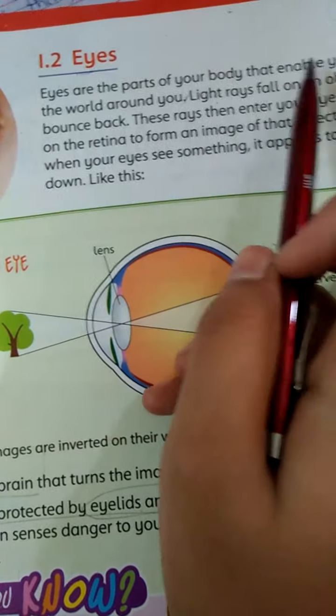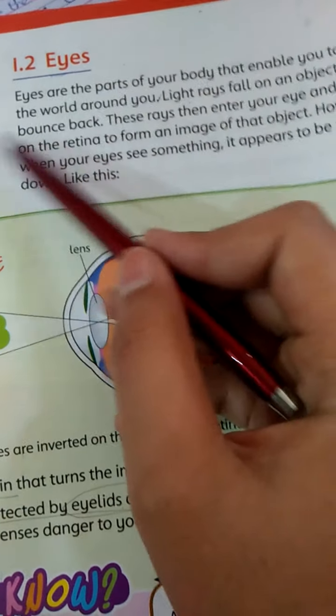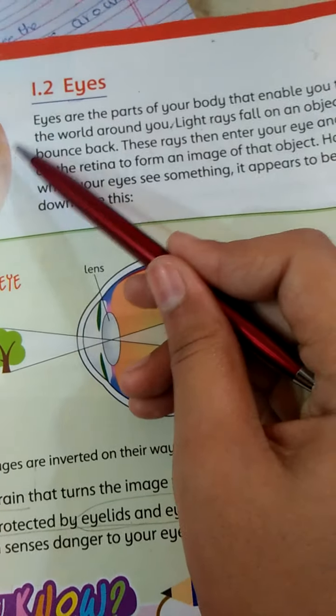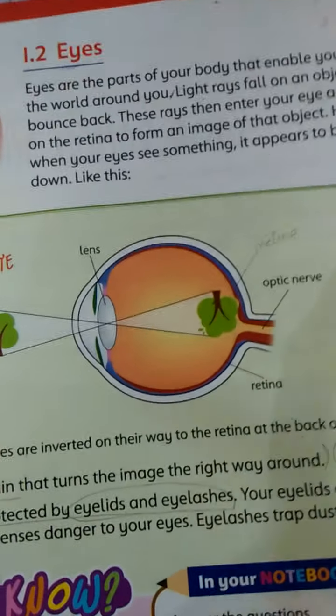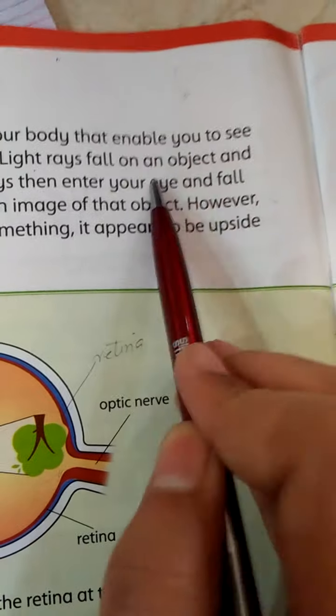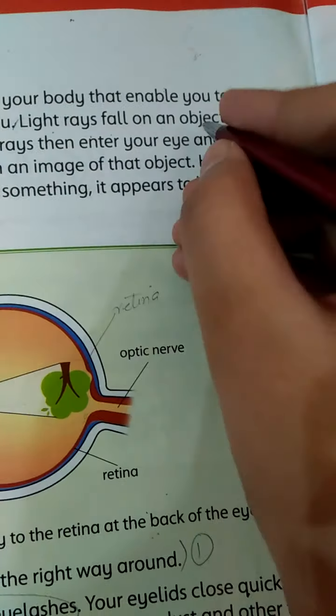Eyes are the parts of your body that enable you to see the world around you. Light rays fall on an object and bounce back.